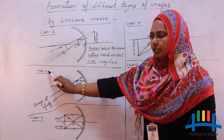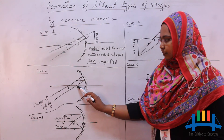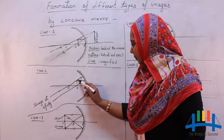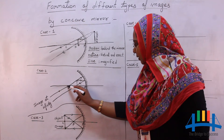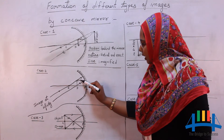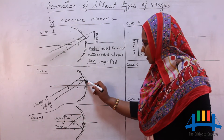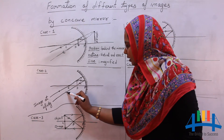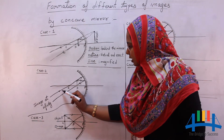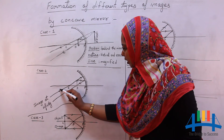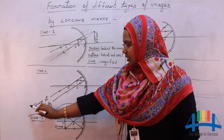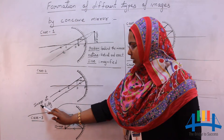Now coming to the second case — when the object is placed at the focus. Our object is on the focus. Ray passing parallel to the principal axis: according to rule one, when the ray is parallel to the principal axis, it passes through the focus — this is the reflected ray. The second rule: ray passing through the center of curvature gets reflected along the same path. These two reflected rays meet at a very far off distance, so the image is formed at infinity.